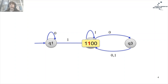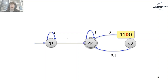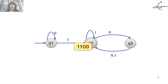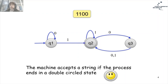Now we read the next letter, which is 1. We are currently at state Q2 with input 1 — it's a self-loop, so we stay at state Q2. The next letter is 0, so we move from Q2 to Q3. We have one additional letter to read: currently at Q3 with input 0, we move to state Q2. We finish reading the word at state Q2, which is a double-circled accepting state. Therefore, the word 1100 is accepted by this automaton.